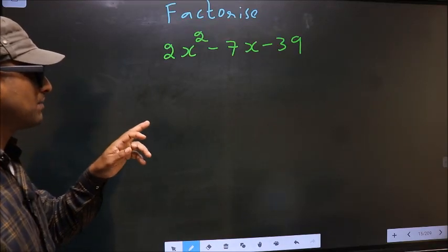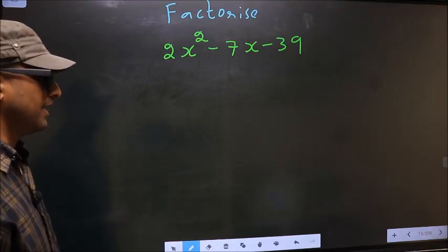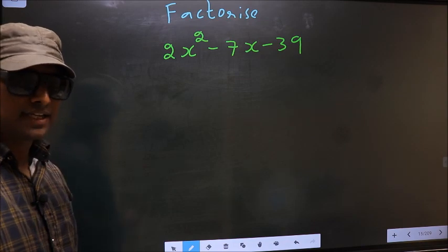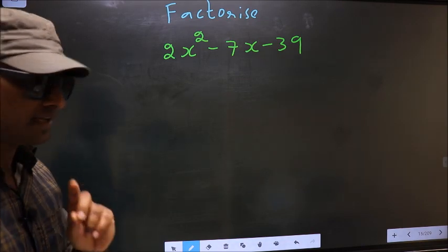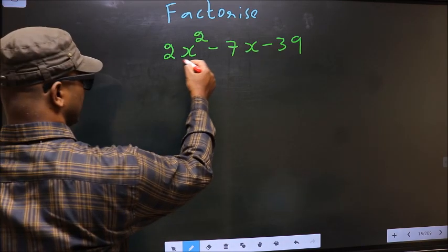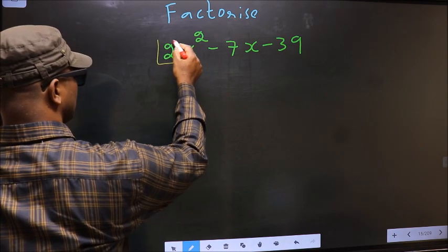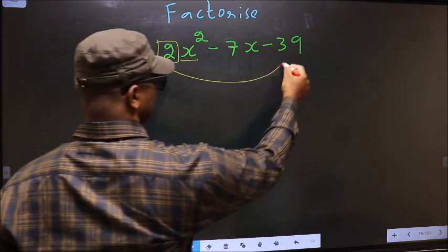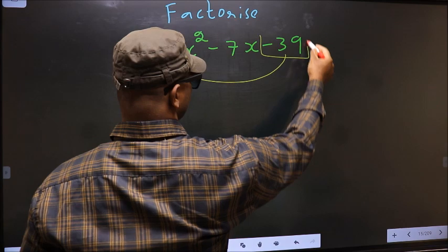Factorize 2x² - 7x - 39. To factorize, step 1: the coefficient of x² (that is 2 here) should be multiplied to the constant (that is -39).